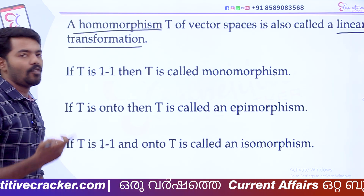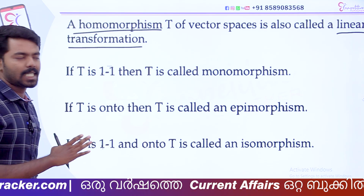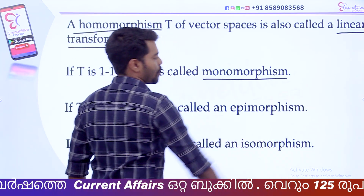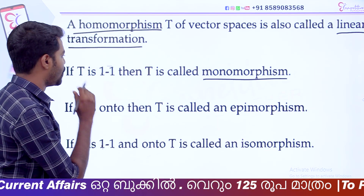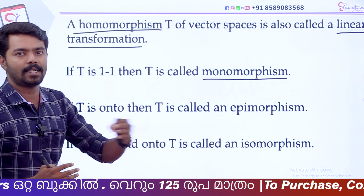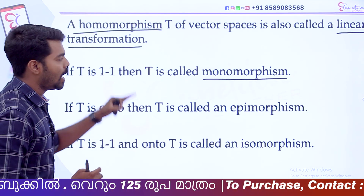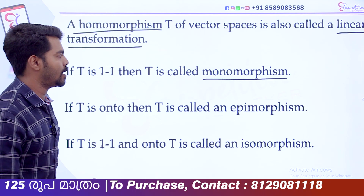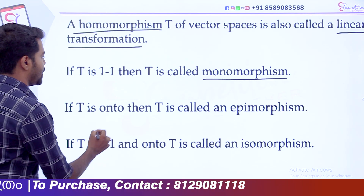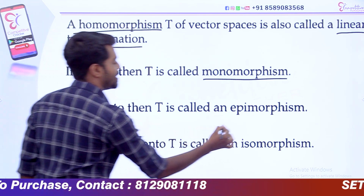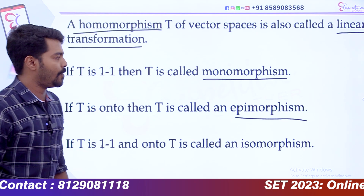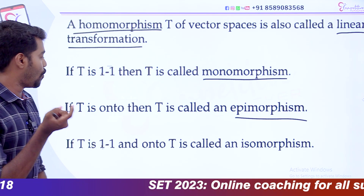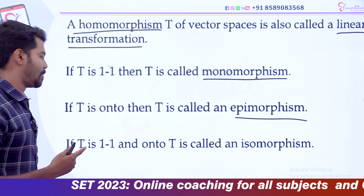If T is one-one, that function is called monomorphism. If T is onto, that function is called epimorphism. It is so important. If you call the mapping onto, we call it epimorphism.